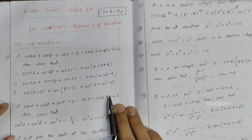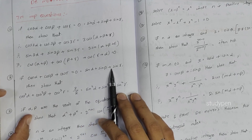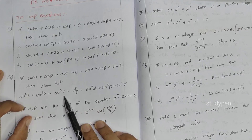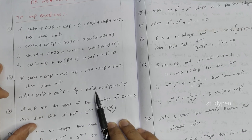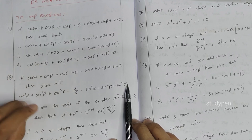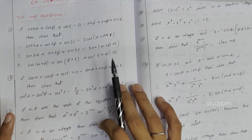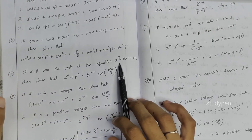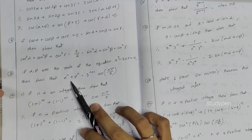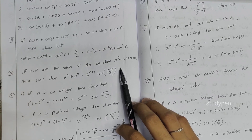Next question: if cos α + cos β + cos γ = 0 = sin α + sin β + sin γ, then show that cos² α + cos² β + cos² γ = 3/2 = sin² α + sin² β + sin² γ. This is one of the very important questions.